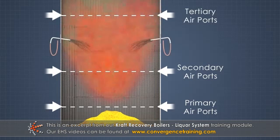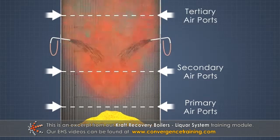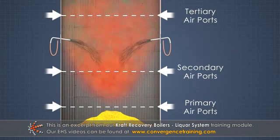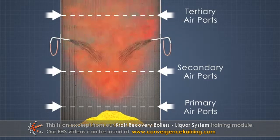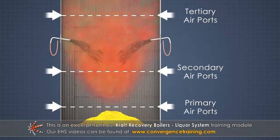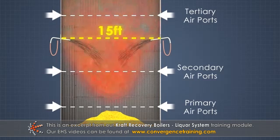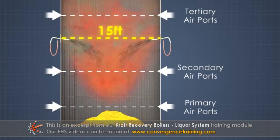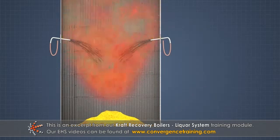The strong black liquor is sprayed into the boiler between the secondary and tertiary ports through the liquor gun ports, located at about 15 feet above the furnace bottom.